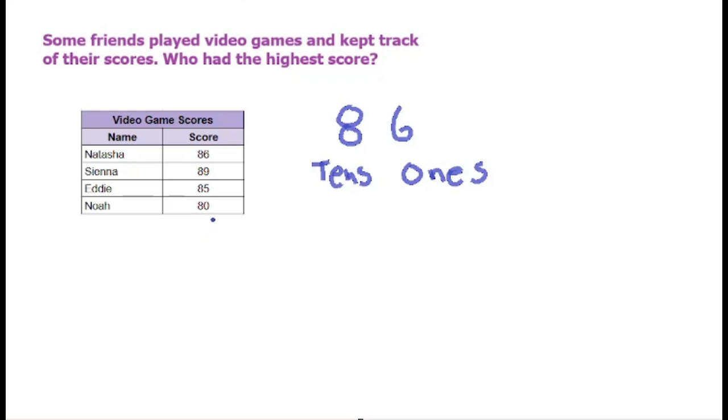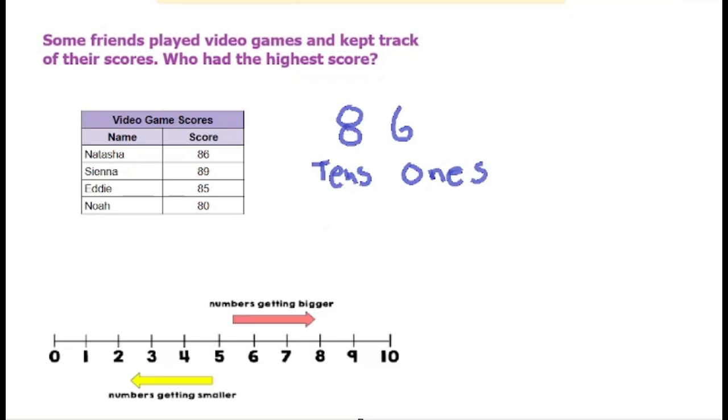So in the next digit we see 6, 9, 5, 0. So to help us figure out who has the highest score we could look at the number line.